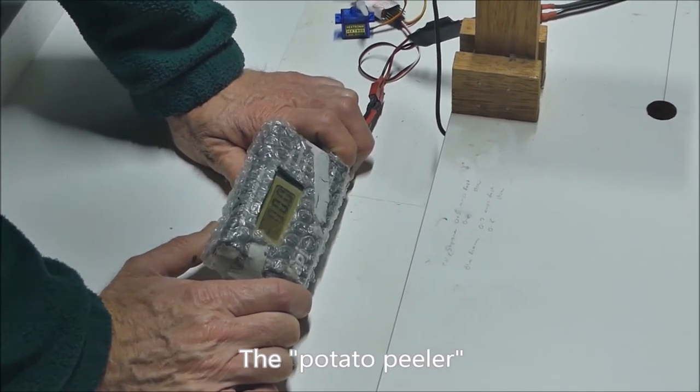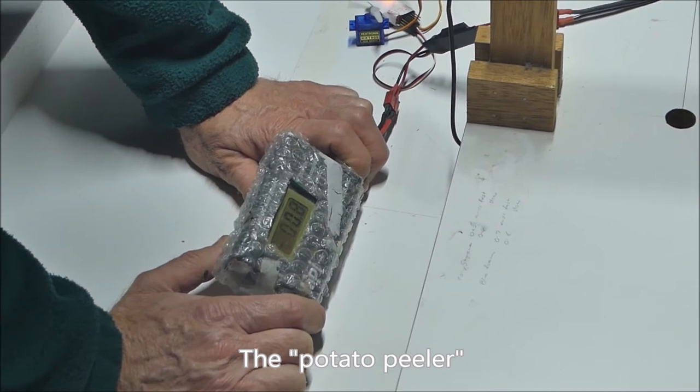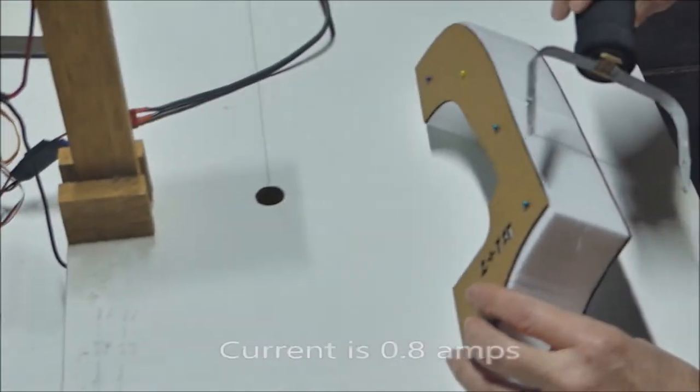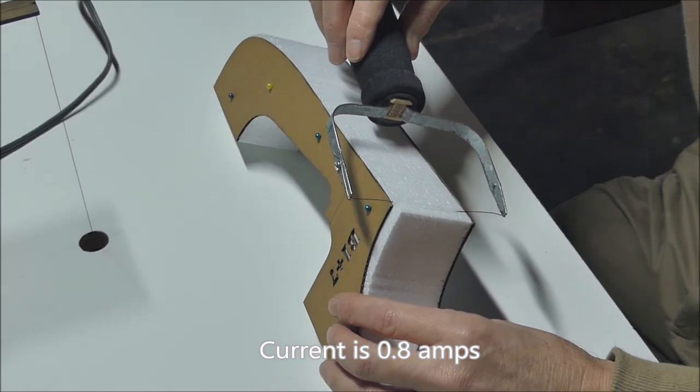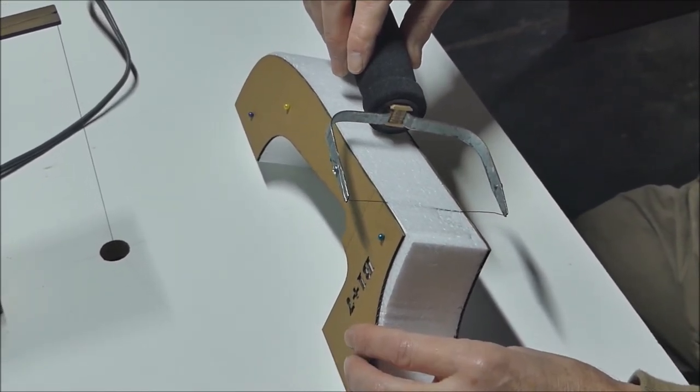Because you've got a much shorter wire. Must be. So you're having trouble getting it to... Yeah, 0.8. That's it. That's the least I can do. 0.8 of an amp is the minimum current through the potato peeler end cutter.